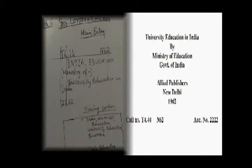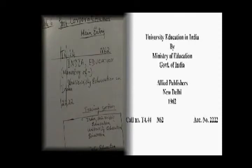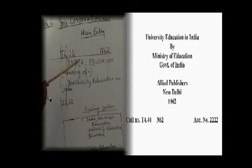Now the example for government corporate author: unlike personal author, for government corporate author we copy down all the given authors in the heading section. The main difference between personal author and corporate author is that for government corporate author the country's name is taken as the principal author, and the rest of the authors are arranged according to hierarchy. The class number is T4.44 and the book number is N62.